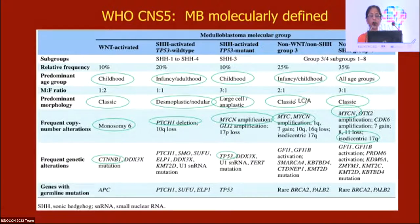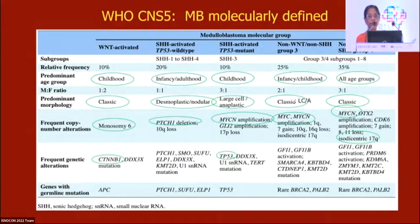Looking at the WHO table of molecular groups: classic histology occurs across all molecular subtypes; desmoplastic/nodular is largely in the SHH subgroup, more in p53-wild-type; large cell anaplastic is mainly in p53-mutant SHH and in Group 3 non-WNT non-SHH. So classic histology can belong to any molecular subgroup, large cell largely belongs to Group 3 or p53-mutant, and desmoplastic/nodular is practically confined to p53-wild-type SHH-activated.